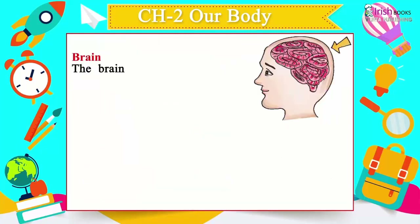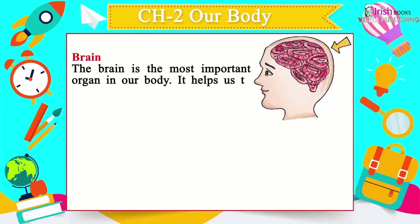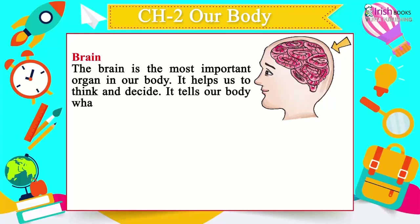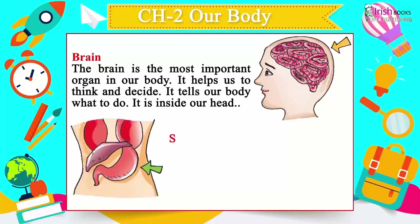Brain: The brain is the most important organ in our body. It helps us to think and decide. It tells our body what to do. It is inside our head.